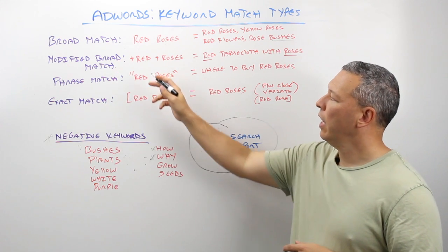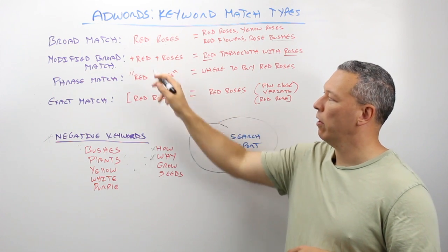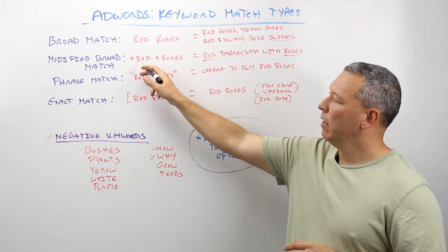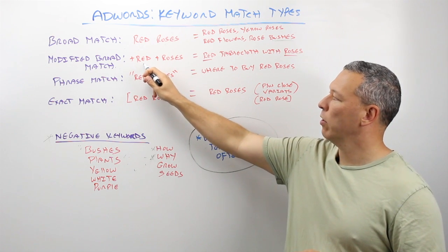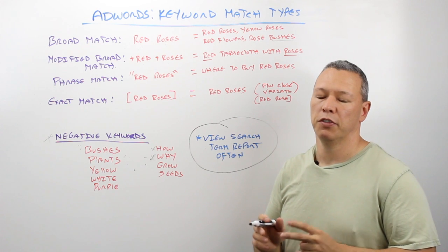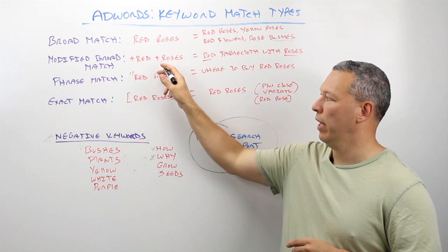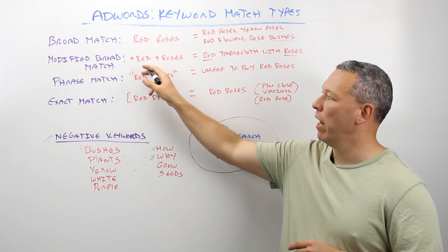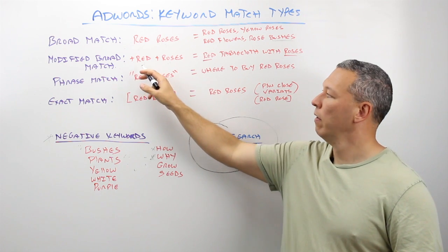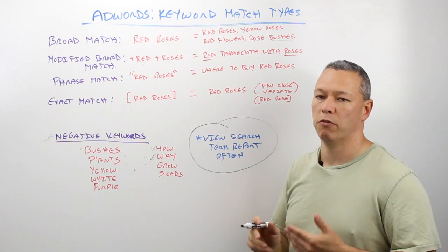The next one is modified broad match. When creating your keyword, you put a little plus sign right before the word, and what that tells Google is that if somebody types in a search query, it has to contain the word 'red' and it has to contain the word 'roses.' It has to contain both words, but they don't necessarily have to be in order. You can also put a plus in front of one word and not another — for example, if you just used plus 'red' and not 'roses,' you may get terms like 'red flowers' or 'red plants.'